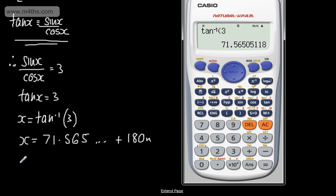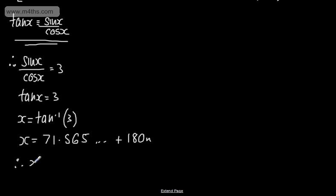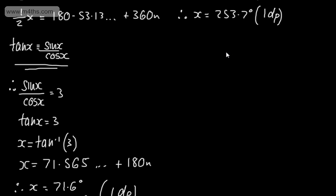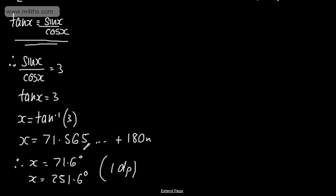So my first solution, correct to one decimal place, is x = 71.6 degrees. Adding 180, the next solution is 251.6 degrees, to one decimal place. We have two solutions.